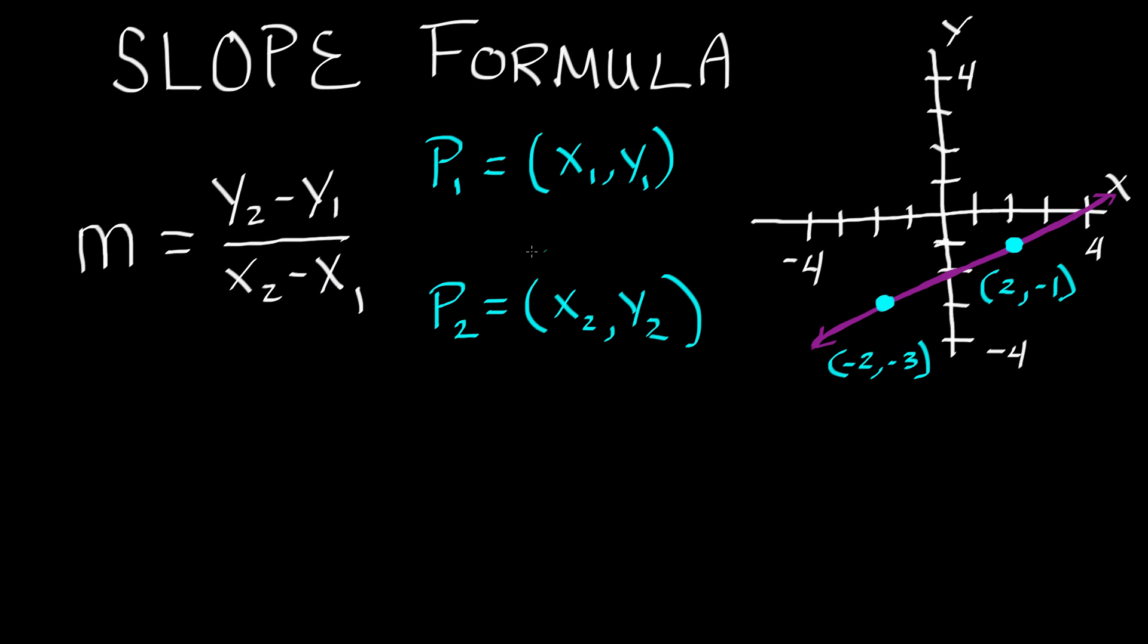We just need to pick one of these points to be point 1 and the other one to be point 2. And it doesn't make a bit of difference which one you pick to be which. So I'm just going to choose this one to be point 1. And then this one over here, I'll call that one point 2. You just need to make sure that you're consistent with the y2s and y1s and x2s and x1s in this formula.